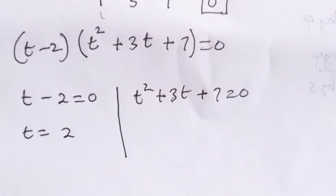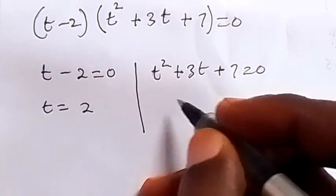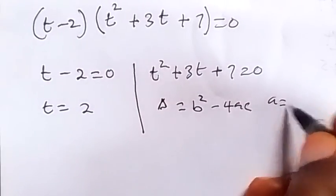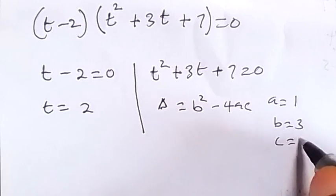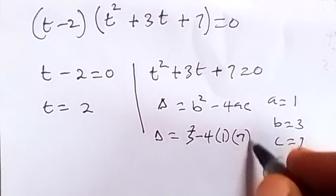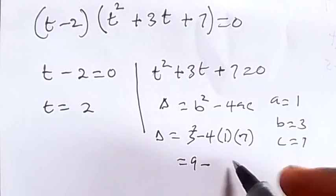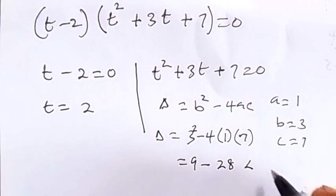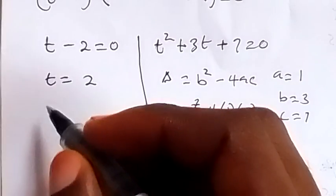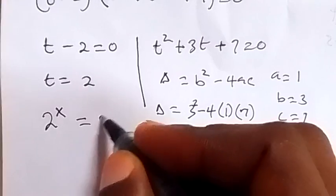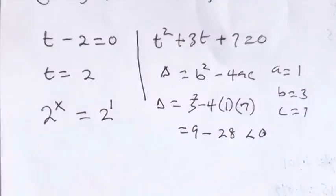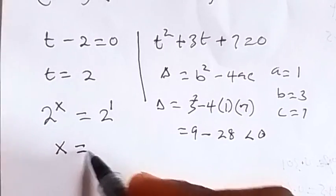We can check whether the quadratic has solutions using the discriminant b squared minus 4ac. Here a equals 1, b equals 3, c equals 7. The discriminant is 3 squared minus 4 times 1 times 7, which is 9 minus 28, clearly less than 0. So no real solution from there. From t equals 2, since t equals 2 raised to power x, we have 2 raised to power x equals 2, which is 2 raised to power 1, so x equals 1.